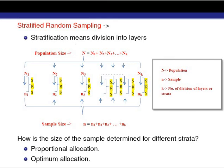In stratified random sampling there is a chance that we may cover every corner of the population, whereas in simple random sampling it may happen that some parts of the population are not included in our sample. Because of this, stratified random sampling gives us a more representative sample compared to simple random sampling.